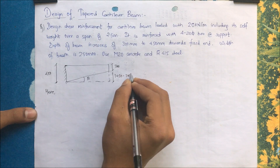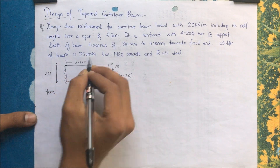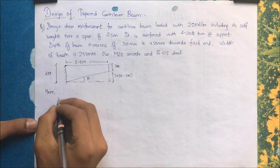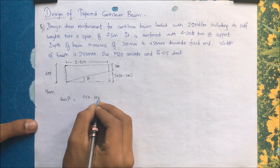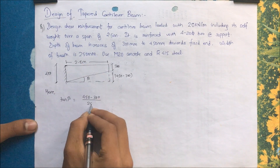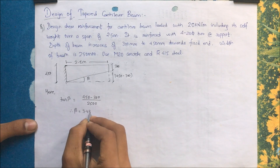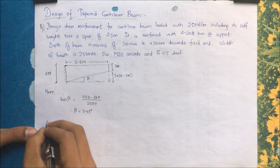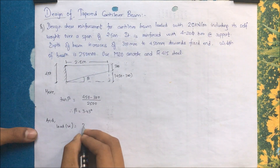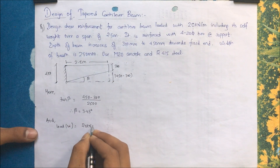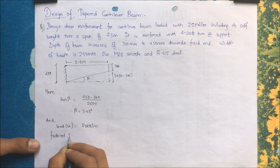The height difference is 450 minus 300 mm and the length of the beam is 2.5 meters. So tan(β) equals perpendicular over base: (450 − 300) / 2500 mm, giving β = 3.43 degrees. The applied load w is 20 kN/m, and the factored load is 1.5 times that, giving 30 kN/m.